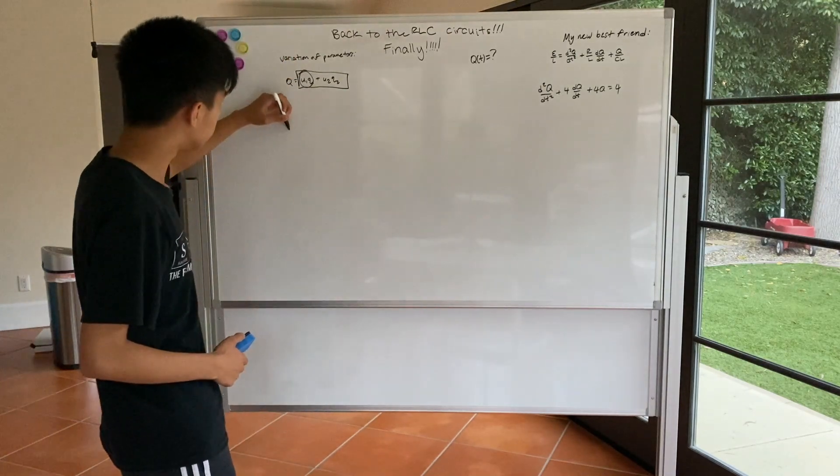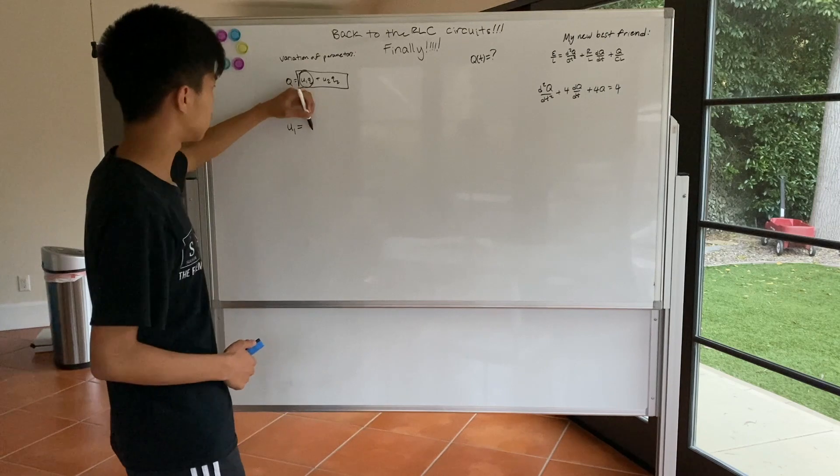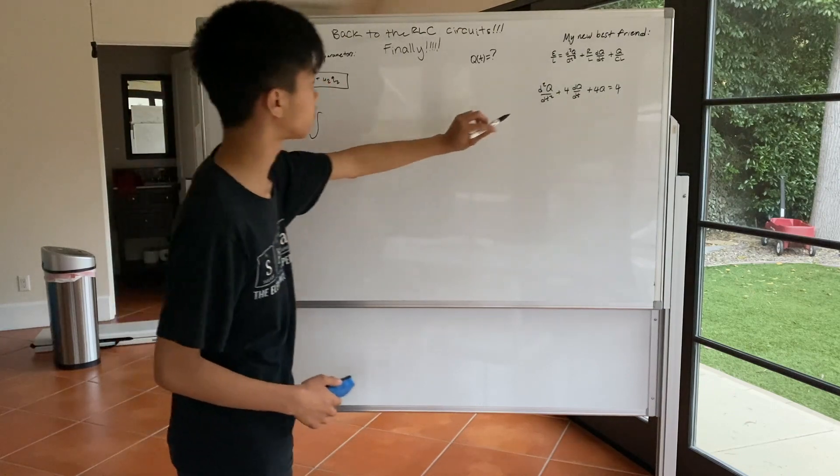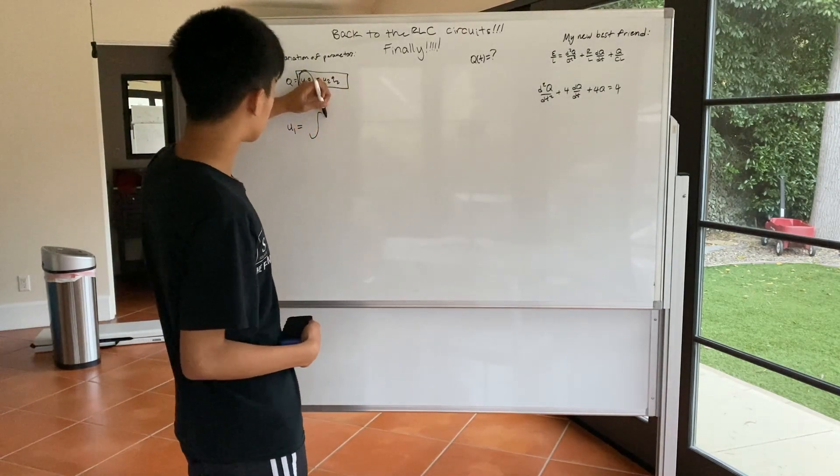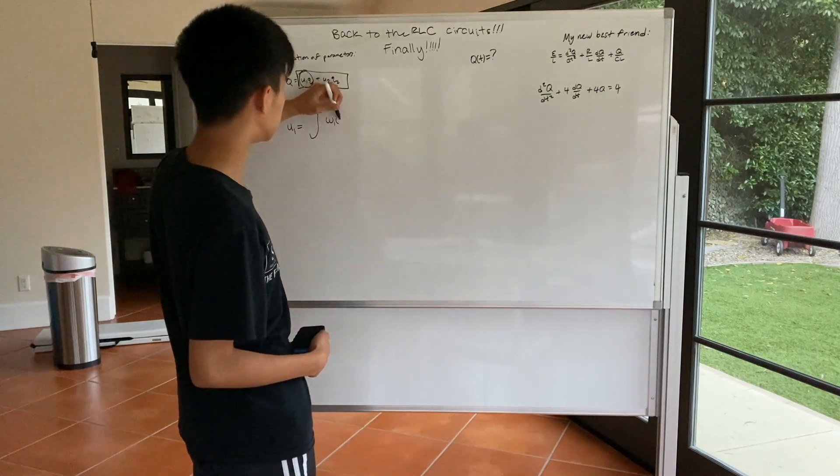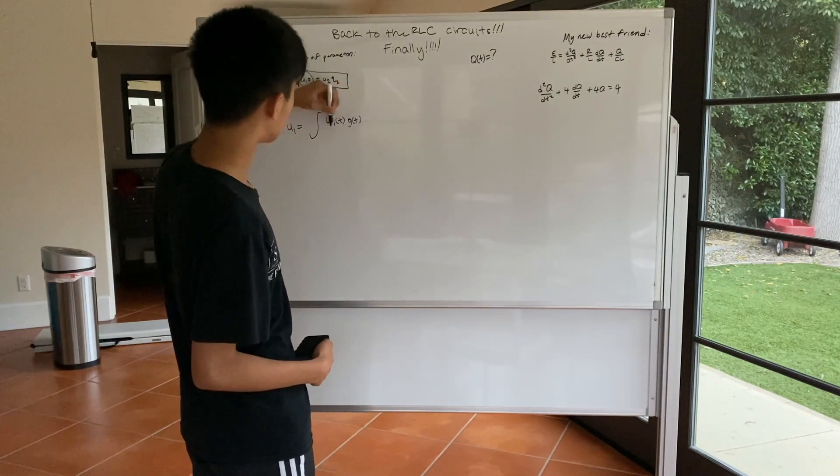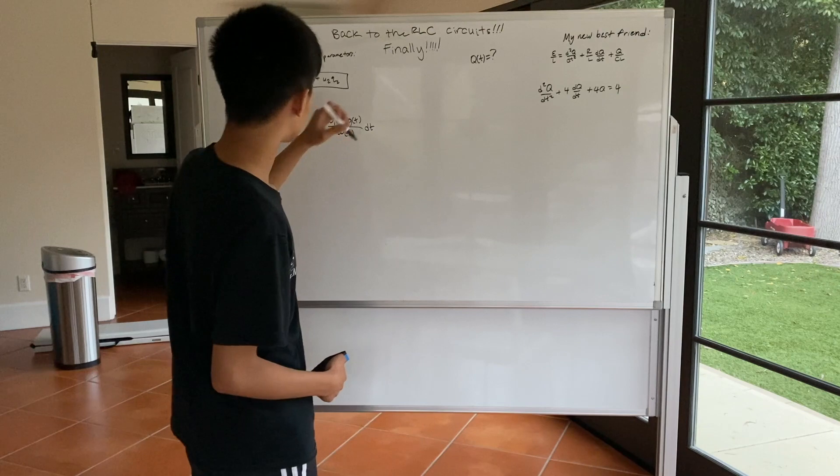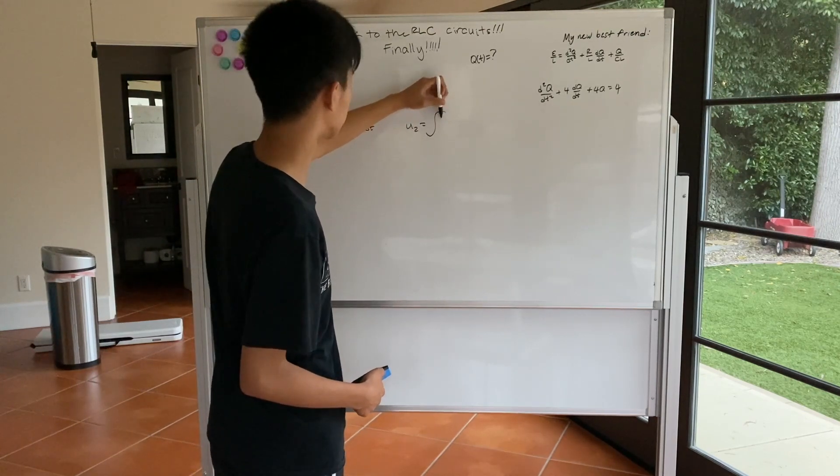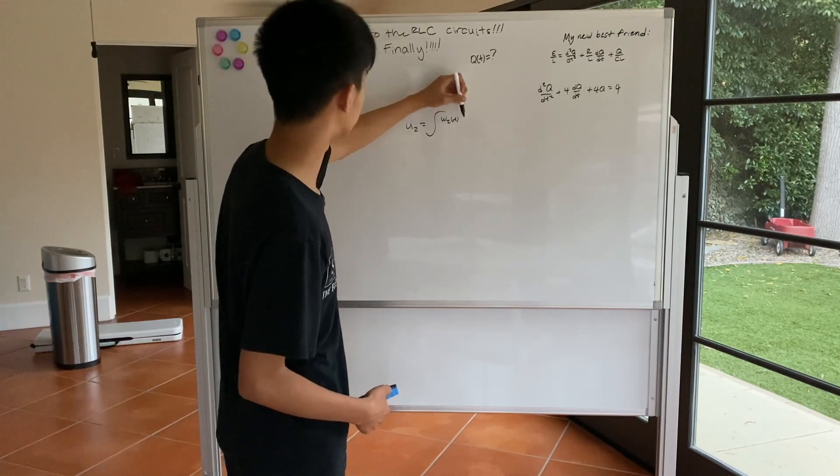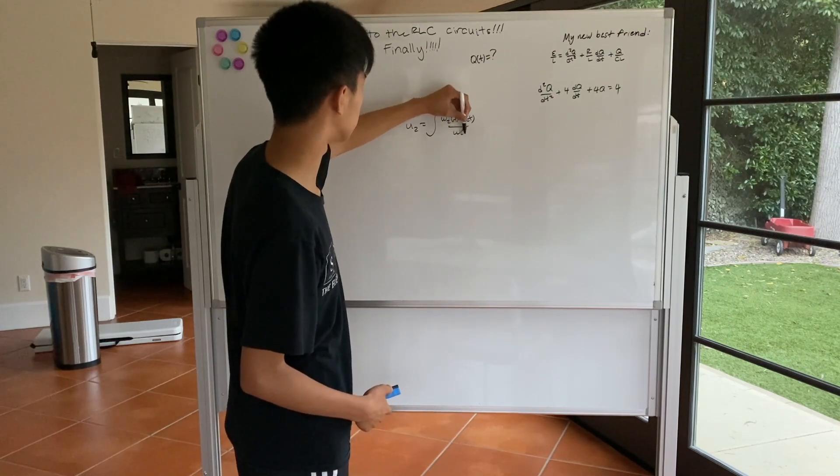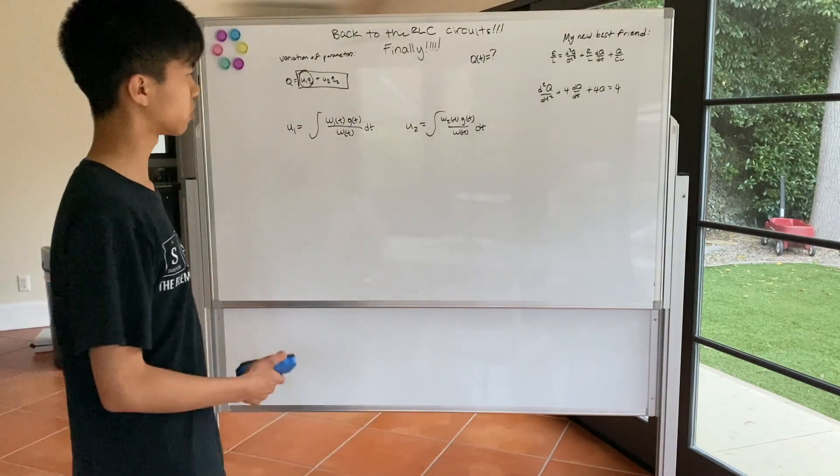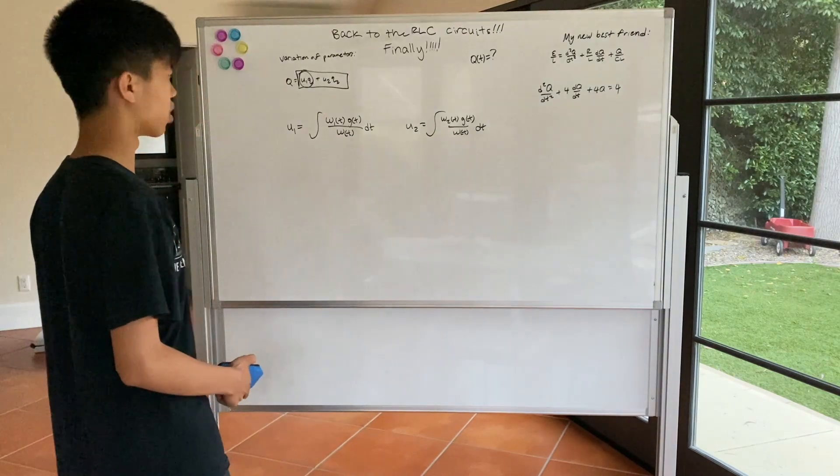So let's start off with this first term. So the U1 that we want to solve for is equal to the integral of Wronskian 1 of T times G of T over the total Wronskian, the Wronskian of everything. Then U of T is equal to integral of Wronskian number 2 of T, G of T, over Wronskian of overall dt. And in case you guys don't know what a Wronskian is, because I don't think I ever explained what a Wronskian is,